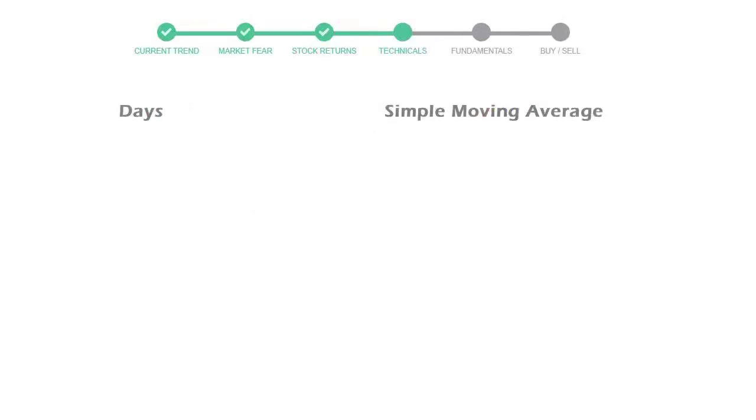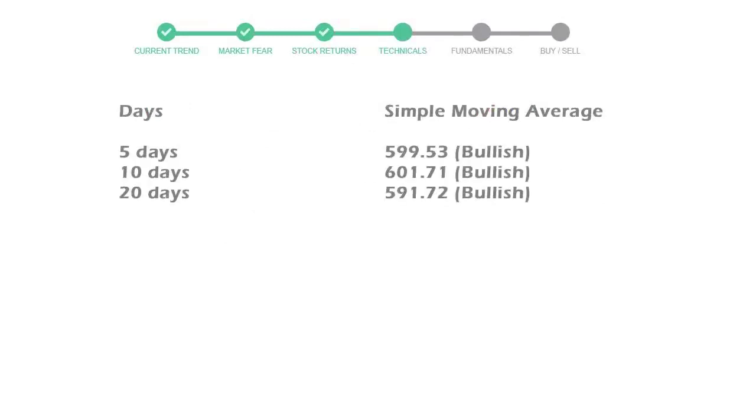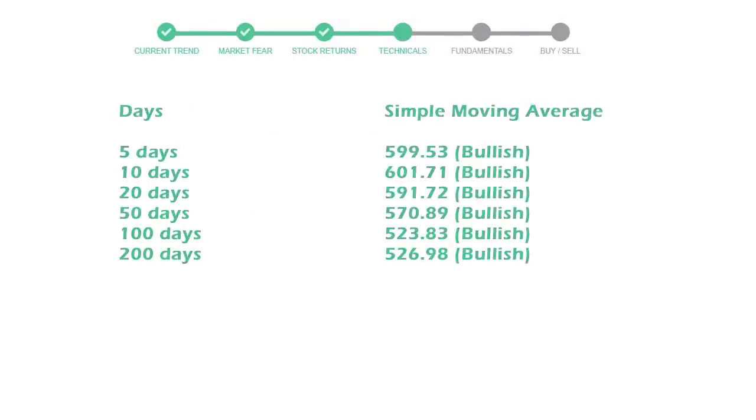Now let's have a look at simple moving average data. The five-day average for Broadcom is moving with 599 towards a bullish indication.